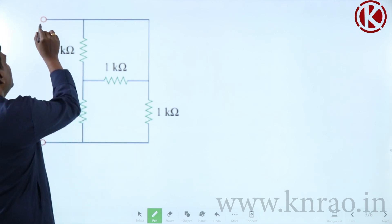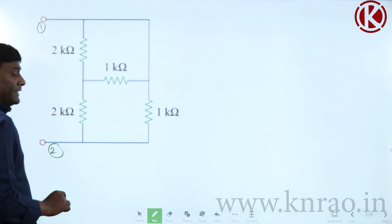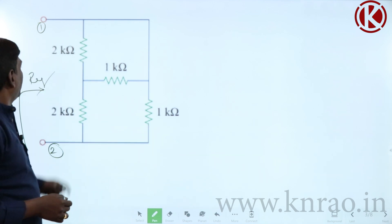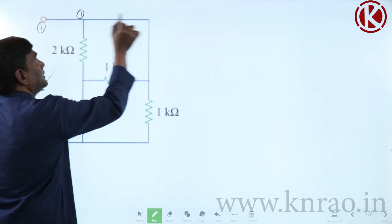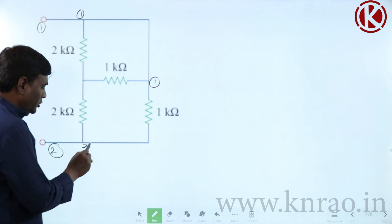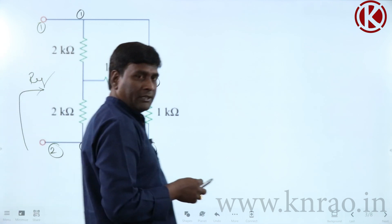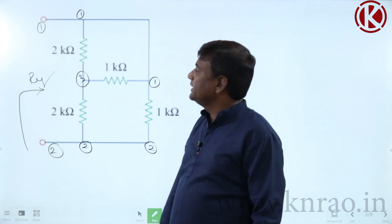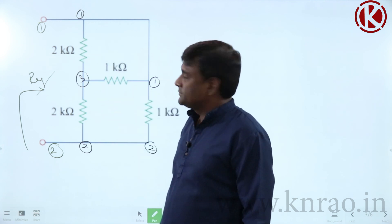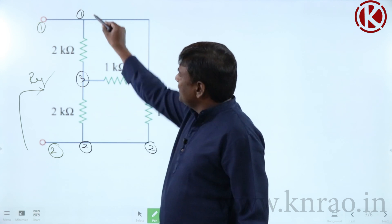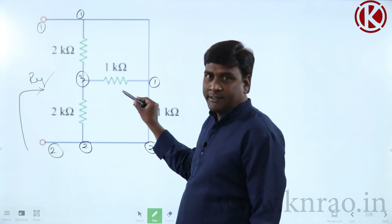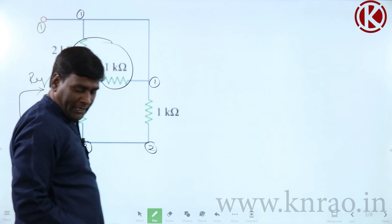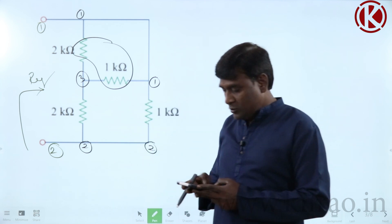In the next problem, this is node 1 and this is node 2; we need to find the equivalent resistance across nodes 1 and 2. The intermediate node is neither 1 nor 2, so call it node 3. Between nodes 1 and 3, both 2kΩ and 1kΩ are connected — they are in parallel: 2×1/(2+1) = 2/3 ≈ 0.667kΩ.